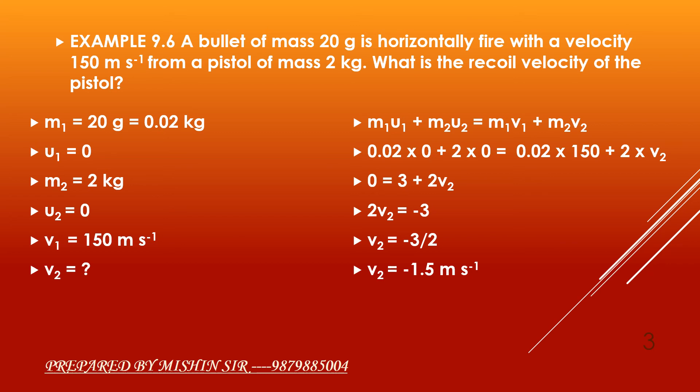So, recoil velocity is 1.5 meter per second. As minus sign indicates, it is in the opposite direction of the fired bullet. So, it is considered as recoil velocity of pistol.